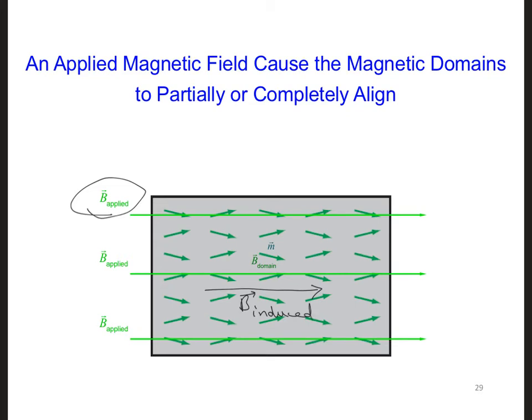So then we have B total in this ferromagnetic material is B applied plus B induced, which is greater than B applied.